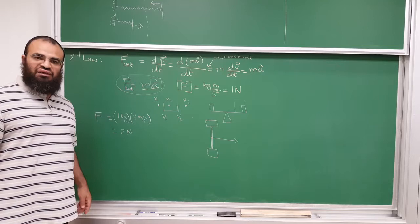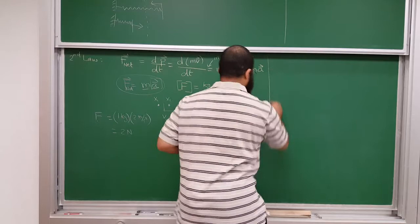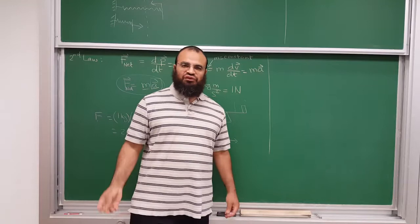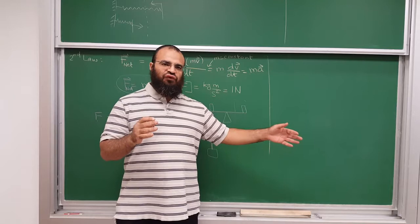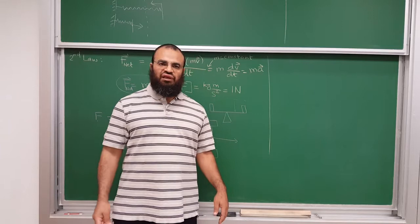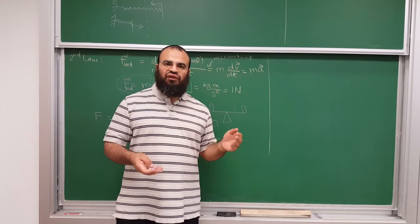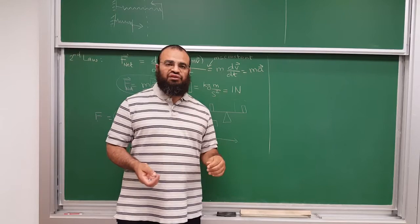Now, how about Newton's third law? The third law is concerned about the entities that apply the force. Let's remind ourselves: the first law says if the net force on an object is zero, the object will continue moving in a straight line at constant velocity — or remain at rest. The second law answers: if there is a force, calculate the net force and it would cause an acceleration equal to F=ma, assuming the mass is constant.